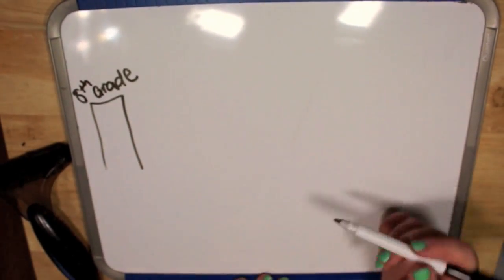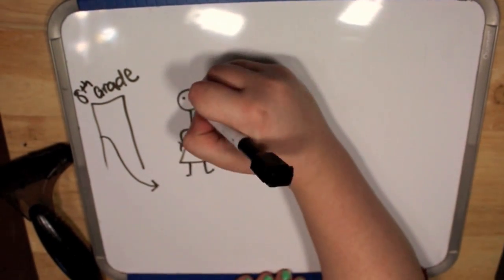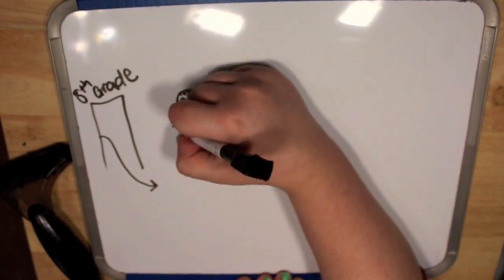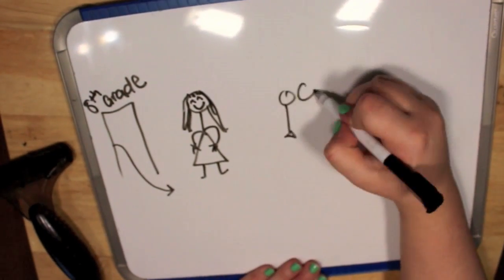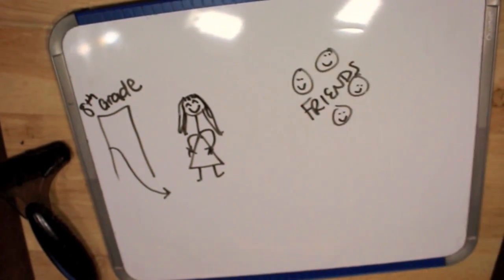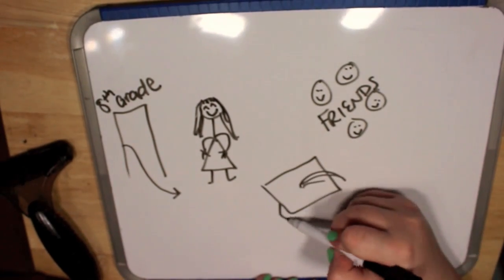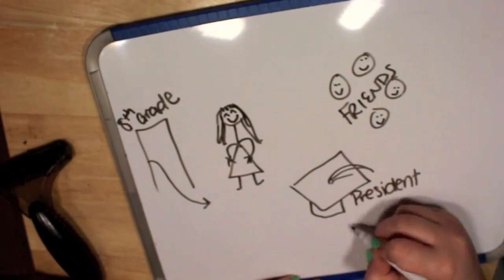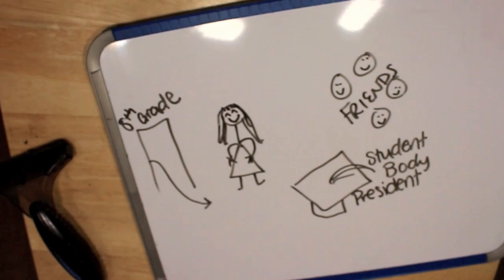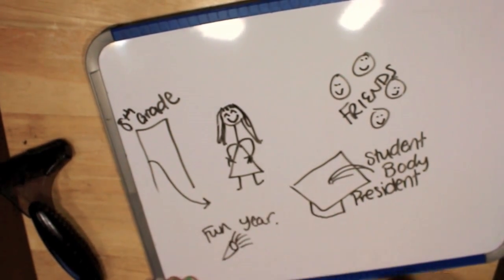So, in eighth grade, things turned around a little bit for me. I grew out of my awkward phase a little bit. And I started to kind of come out of my shell more. And I had a really great group of friends that I was really close to. And we had a lot of fun. And I became student body president that year. So, that was really cool. And I just had a lot of fun in eighth grade. And it was a great year. And I noticed that the even number grades are always better for me. I don't really know why.